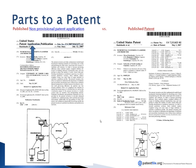Just to clarify: the same invention can have two separate published documents. The first is a published patent application, and the second is a published patent. You know it's a published patent because it has a patent number — you won't get a patent number until it actually becomes an issued patent.